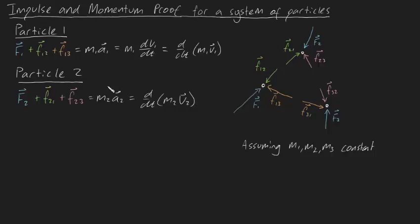Now we can't do anything with this yet. Let's write out the equation for particle 3 and see what we get. Well, we know that the sum of forces is equal to Ma, so that means that F3 plus F31 plus F32 is equal to M3 A3. And just like before, we can also write this as d/dt of M3 V3, like this.